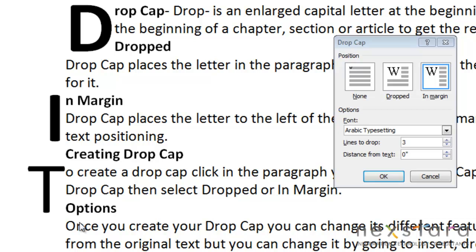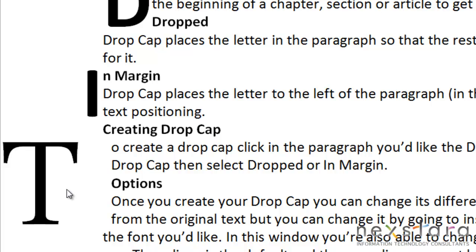By changing the lines to drop number, you can increase the amount of lines affected by your drop cap. The more lines you add, the further down into your paragraph the drop cap will drop. For our purposes, we'll change it to 5. Lastly, you can change the distance from text, which allows you to add space between your drop cap and the rest of your text. You'll automatically start at 0 inches, but if you want the text to be further away from your drop cap, you can increase the space. So we've changed the font, it's now 5 lines dropped, and it's also further away from the text.